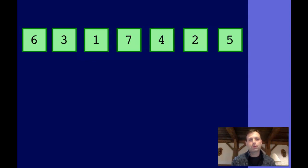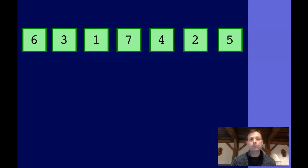We have an example here with seven numbers — numbers one through seven in a random order. The way that the selection sort works, and the reason it's called the selection sort, is that we select from this list the maximum value. You can also do this with the minimum value, but for this example we're going to use the maximum value. We iterate through this list looking for the largest value.